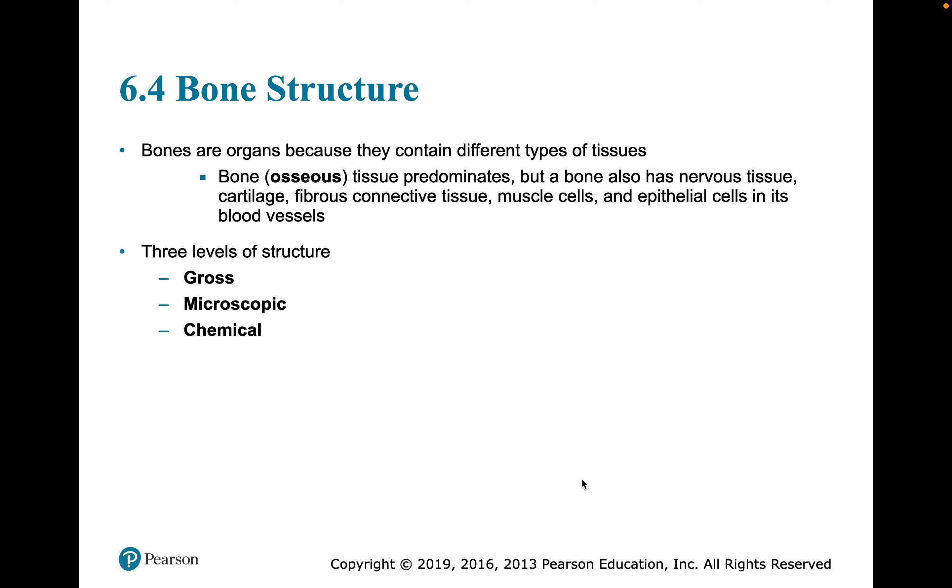We can look at the structure of a bone at at least three different levels: the gross structure, the microscopic structure, and the chemical structure of bone.